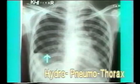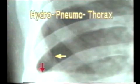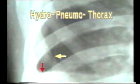This x-ray shows a horizontal fluid level in the right hemithorax which is touching the chest wall laterally. The red arrow shows the horizontal fluid level and the yellow arrow shows the border of the collapsed lung seen parallel to the chest wall, separated from it by the radiolucent band of Pneumothorax. These two lines mark the Hydro-Pneumothorax.